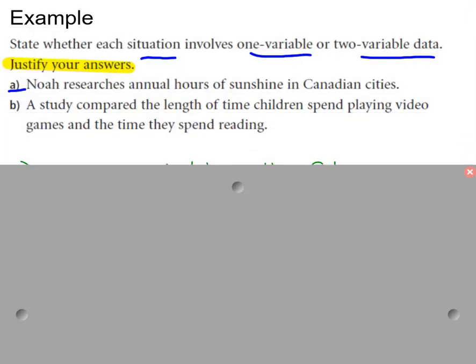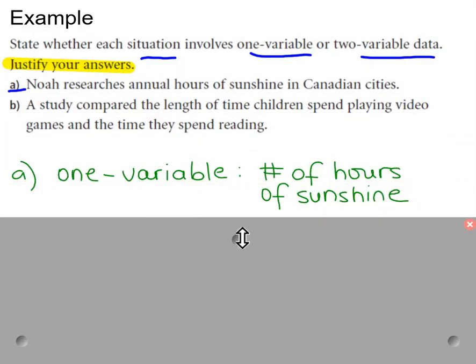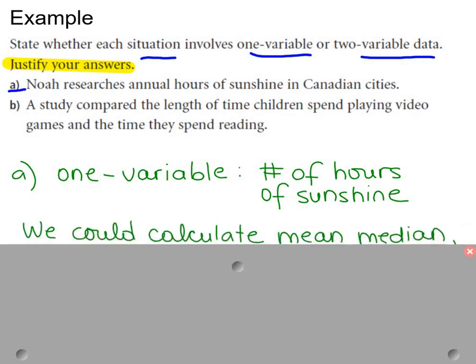Will this represent a one variable or two variable data? Let's take a look at the answer. Well, the reason why it's one variable data is because there's really only one number that's changing, a number of hours of sunshine. And this compares it to different numbers of cities. Now, this different number of cities is not a variable. It's just a location.